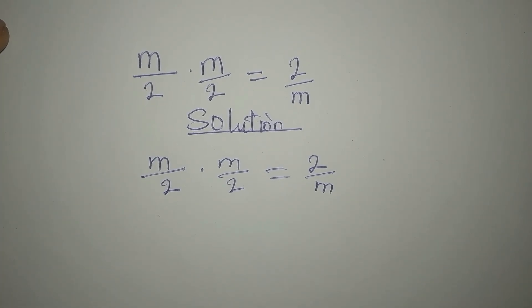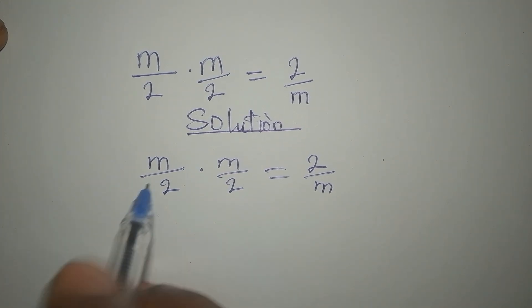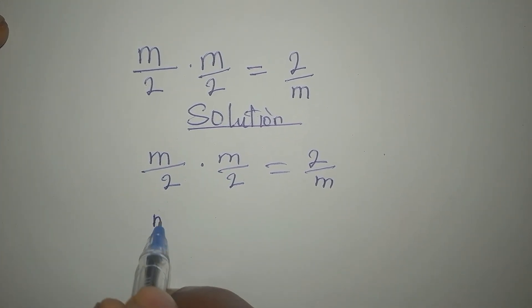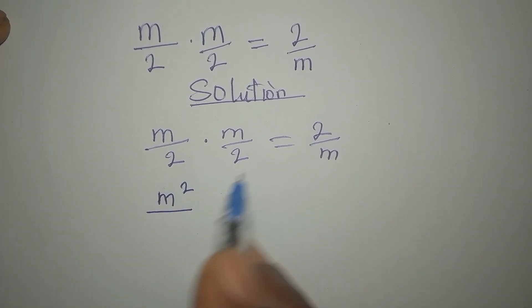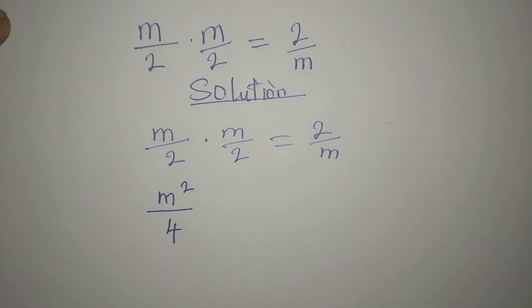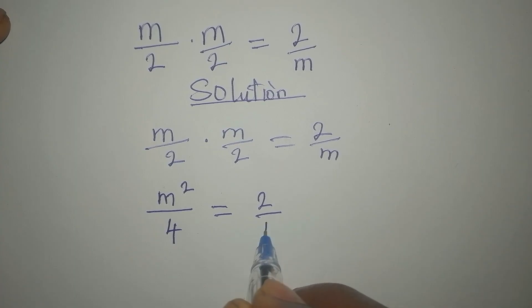To do that, we would multiply what we have on the left. So m times m, that would be m squared over 2 times 2. That is 4. So this will now be 2 over m.